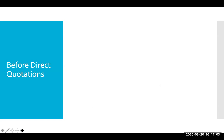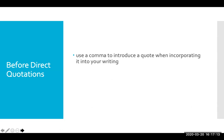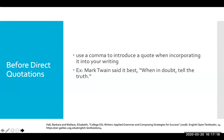Let's look at our last rule: before a direct quotation. We're going to add a comma before our quotation marks when we want to include someone else's direct quote in our writing. For example: 'Mark Twain said it best, "When in doubt, tell the truth."' The comma goes before the quotation marks. As a note: when you're starting a quote, the comma goes before the quotation marks, but when you're ending, the punctuation goes inside the quotation marks. So your punctuation always goes before your closing quotation marks.